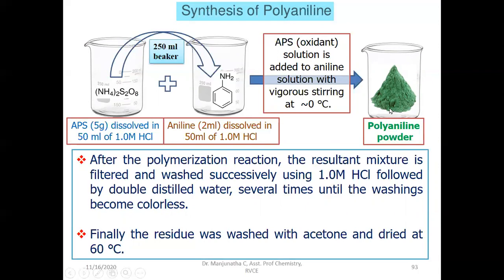That product has to be extracted by filtering. Then it has to be washed with HCl to remove any unreacted aniline, followed by distilled water. You need to wash several times with distilled water. Finally, wash the residue with acetone and dry it at 60 degrees centigrade. This is the simple procedure used for the preparation of polyaniline.